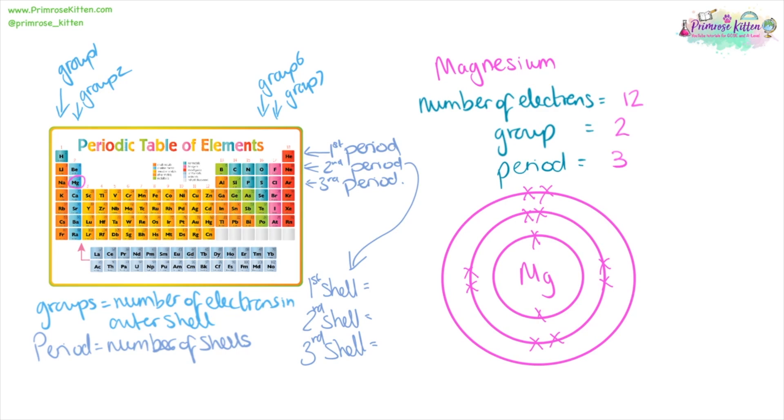From the periods, we know that the first shell can hold a maximum of two electrons. The second shell can hold a maximum of eight electrons. The third shell can hold a maximum of eight electrons. And then you only need to do it up to calcium, so another two for your GCSE.